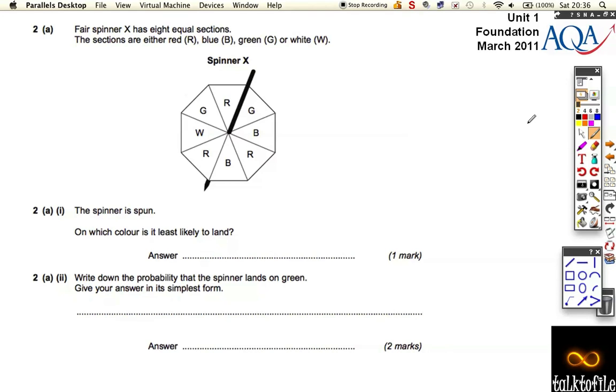Okay, so question 2 on the March 2011 paper. We've got a fair spinner and it's got 8 equal sections. The sections are either red, blue, green or white. The spinner is spun. Which colour is it least likely to land? Well, we know there's a total of 8. Let's note down.